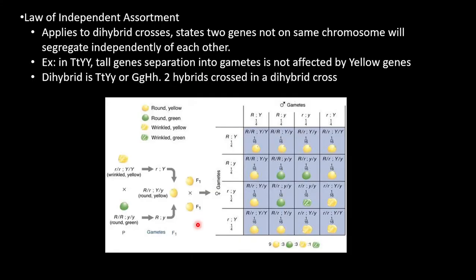Finally is the law of independent assortment. This applies to crosses of two traits. It states two genes not on the same chromosome will segregate independently. If the traits tall and yellow are on different chromosomes, then the idea that the yellow trait has been passed on will not affect the probability that the offspring will receive the tall gene.